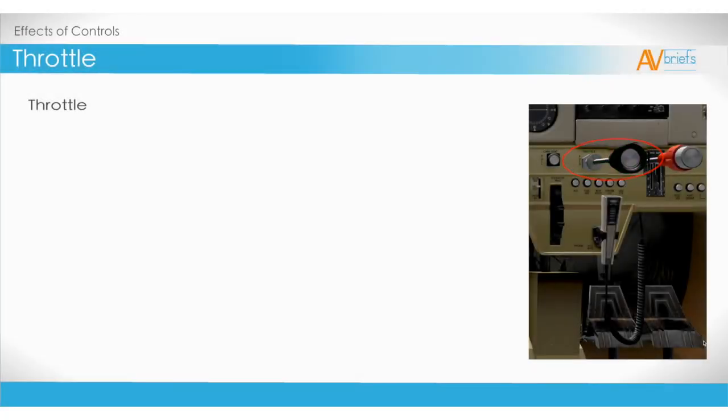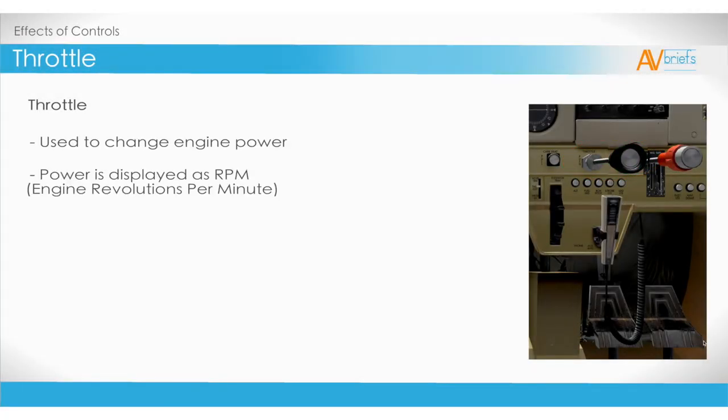The throttle is an important control, as it's used to change engine power. Power is displayed as RPM, or revolutions per minute of the engine. The more times it revolves or rotates, the more power it outputs.